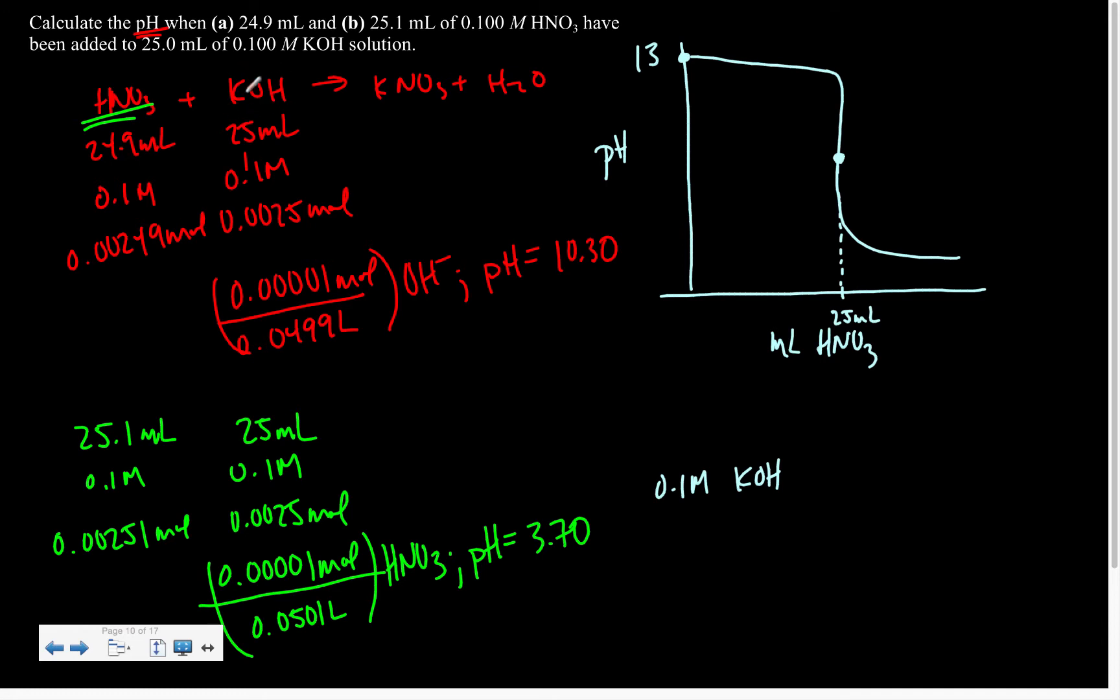Since they're equal in concentration, it would require equal volumes. And if they weren't equal concentrations, we could do some math to figure out where that would be. And the pH of that place is going to be 7, because all that's left are my conjugate species from HNO3 and KOH, and since they're conjugates of strong species, they have no effect on pH.